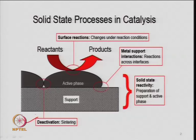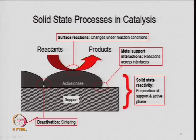The metal-support interaction gives you the idea about the reaction across the interfaces, and the metal may be weakly or strongly adsorbed. That is the chemisorption of the metal, and that can be studied from hydrogen chemisorption. This is solid-state reactivity and we develop this kind of surface during catalyst preparation. The reactant material comes to the surface, adsorbs on the metal, transforms into a product, and then the product desorbs. This phenomenon is known as a surface reaction.